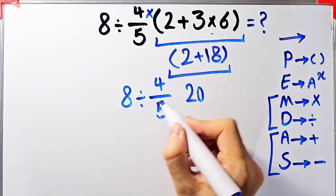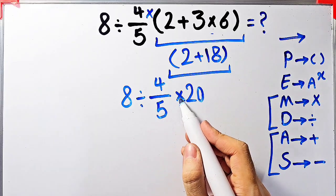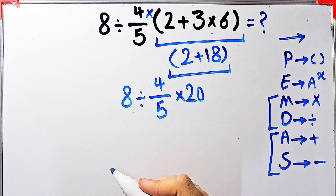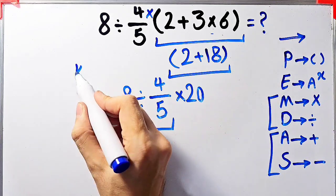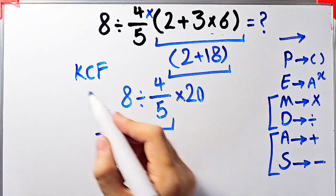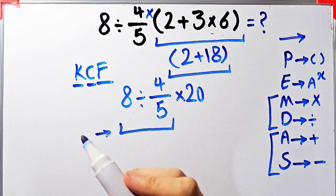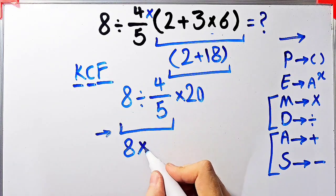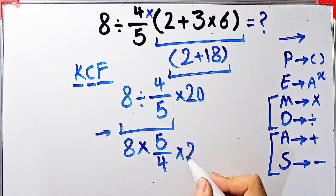Now the question is 8 divided by 4/5, then times 20. We have division and multiplication; since they have the same level of priority we start from the left. To solve 8 divided by 4/5 we need to follow the KCF rule: K stands for Keep, C stands for Change, and F stands for Flip. We keep the first number as it is, then change the sign, and flip the second fraction. Now we have 8 × 5/4, then times 20.